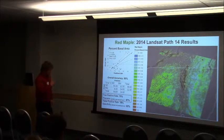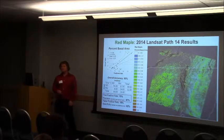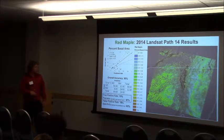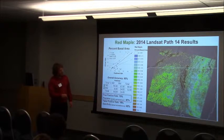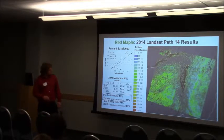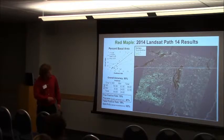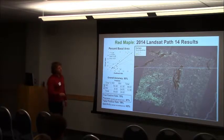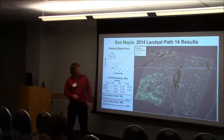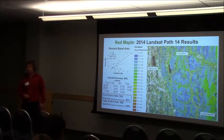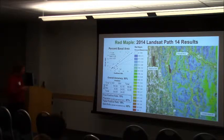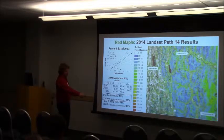Red maple — we're really good at telling you where it's not, and not quite as good at predicting it across the landscape. It's interesting to note that the red maple distribution kind of mirrors sugar maple a little bit, but just at lower percent basal areas. You tend to see red maple more along these wetter areas and perhaps in poorer site qualities — there's a lot of development and agriculture around here, and it's in these small forest patches in between. So maybe generally poorer site qualities.